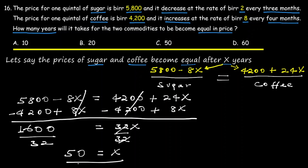So x equals 5. Therefore, the price of sugar and the price of coffee will become equal after 5 years.